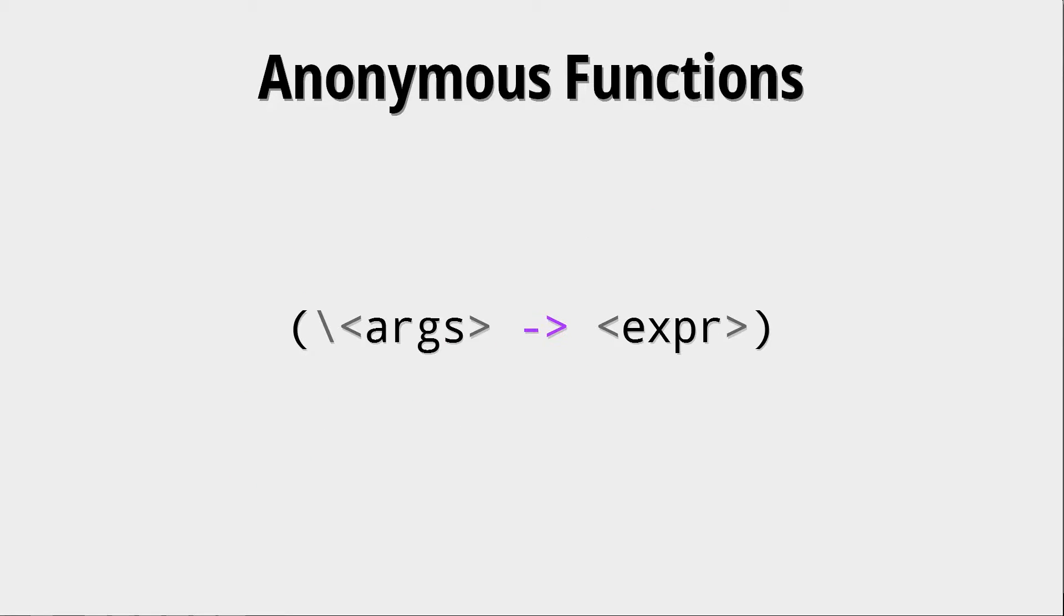An important part of higher order functions are anonymous functions because we do not want to define functions with a name all the time when using them in higher order function contexts, which is why anonymous functions make a lot of sense.